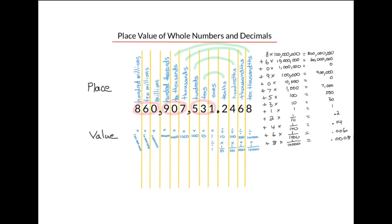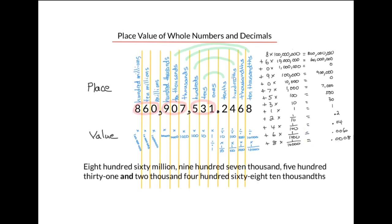Now let's write our number out in words. It would be 860 million, because those digits occupy the millions group; 907,000, because those digits occupy the thousands group; 531. The decimal means AND. And then we say 2,468 ten-thousandths — we write the place value of the last digit.